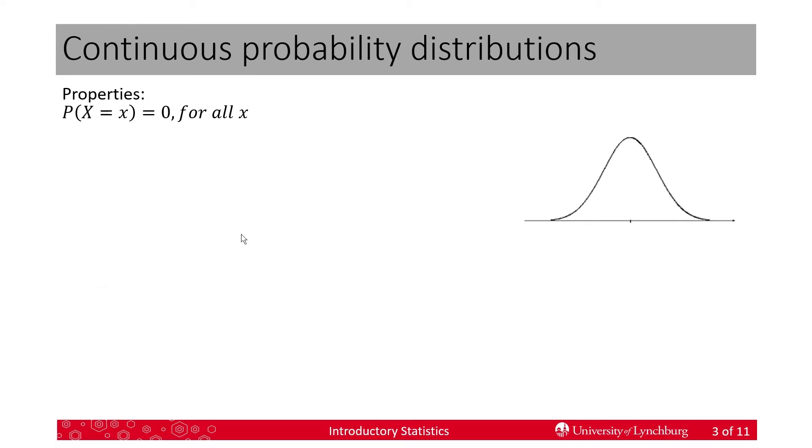The properties: For a continuous probability distribution, it's very different than a discrete distribution because in a discrete distribution, you can say the probability that x is equal to little x is a number. But here, it is a number, but it's zero. Because the area under the curve is one, the probability in the whole probability distribution, the total, is one.